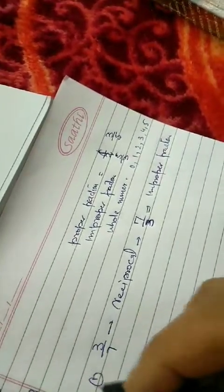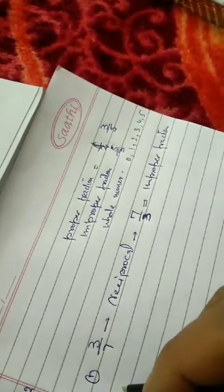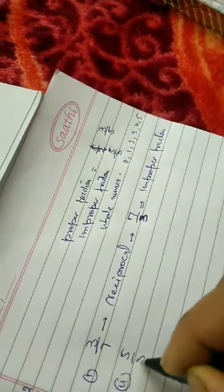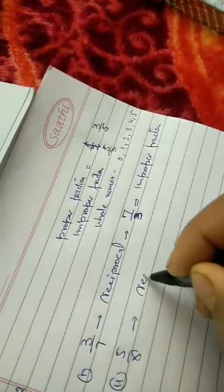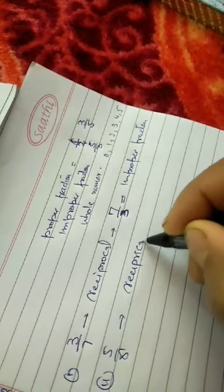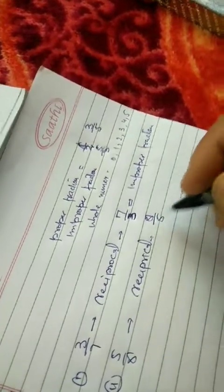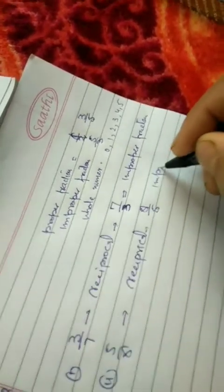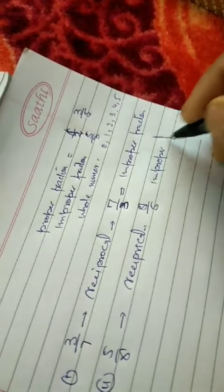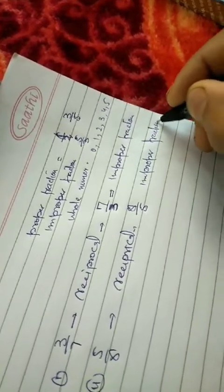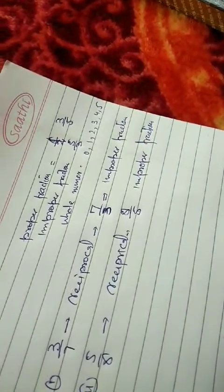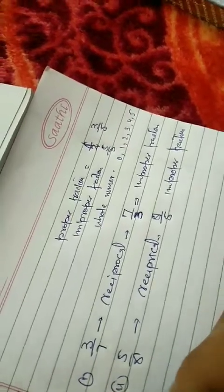Second, 5 by 8. The reciprocal is 8 by 5. We call it improper fraction.